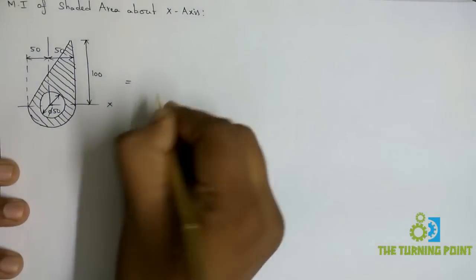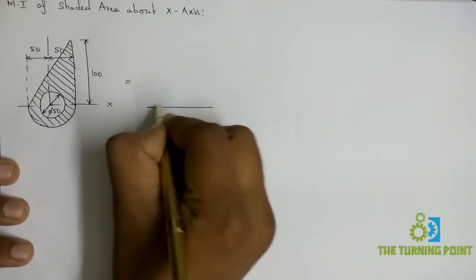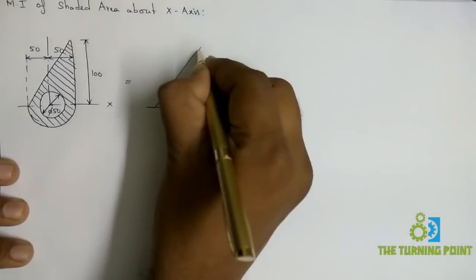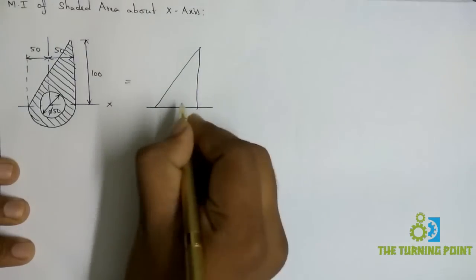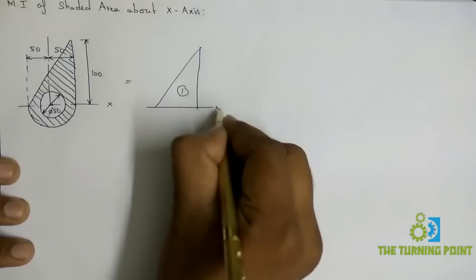So I can write like this. It is a combination of three geometries. The first one is a right-angle triangle, that is the first geometry.